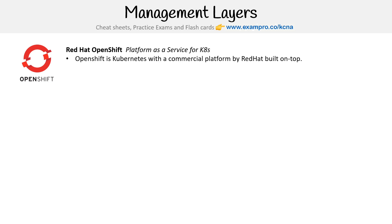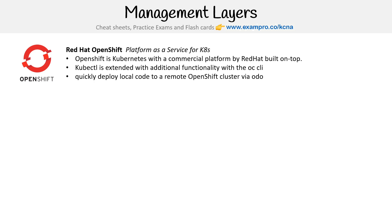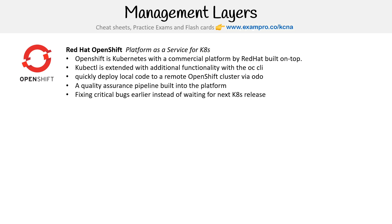You can actually launch OpenShift in IBM Cloud and probably other cloud service providers too. They extend kubectl with their own CLI called OC, which has additional functionality making conveniences like RBAC — which is a pain to set up — a lot easier. They also have Odo, another CLI tool for quickly deploying local code to a remote OpenShift cluster. There's a quality assurance pipeline built into the platform, and Red Hat is known for fixing critical bugs very quickly rather than waiting for the next Kubernetes release — they're very good in the enterprise for rolling out bug fixes.